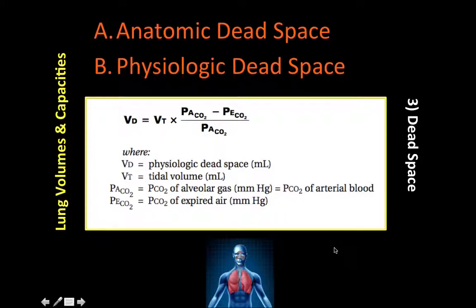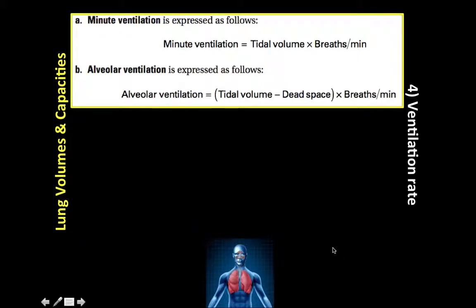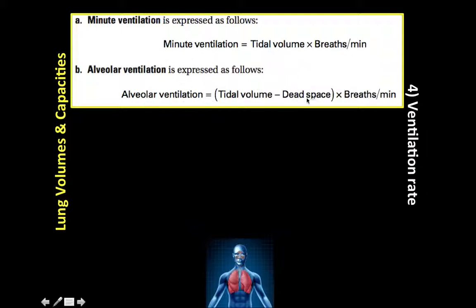Now for ventilation rate. We have two types: minute ventilation and alveolar ventilation. Minute ventilation equals tidal volume times breaths per minute — it's our moment-to-moment breathing rate. Alveolar ventilation equals (tidal volume minus dead space) times breaths per minute. This accounts for dead space and is a more accurate estimate of effective alveolar breathing.